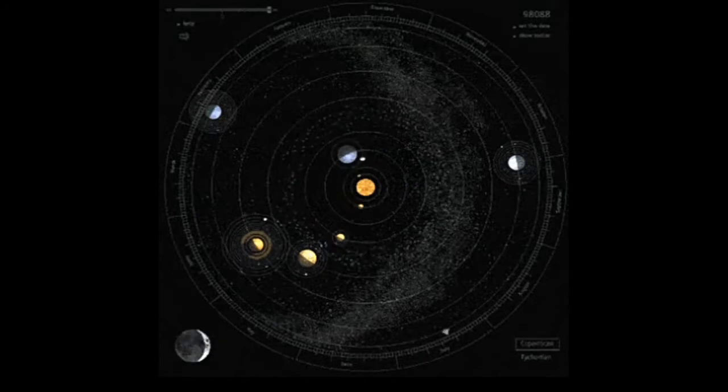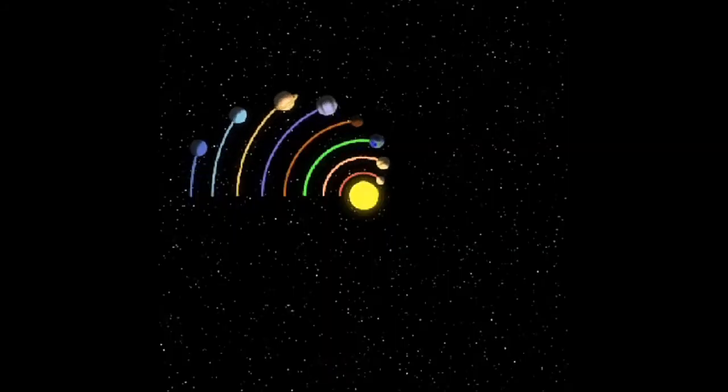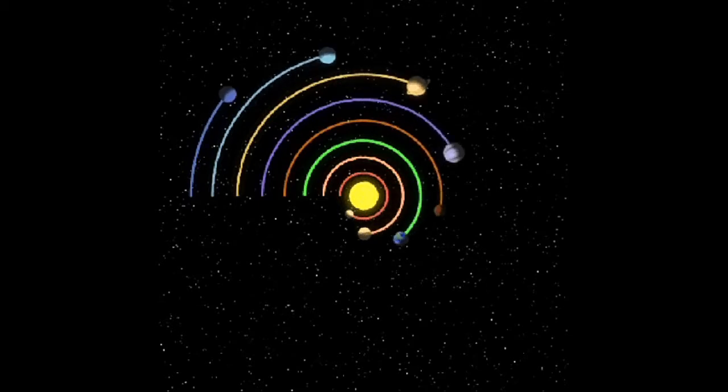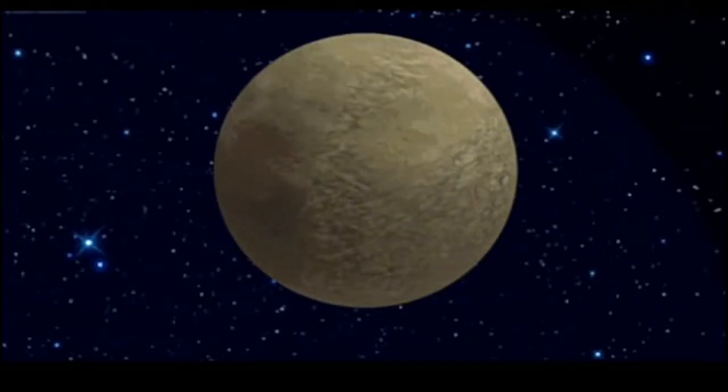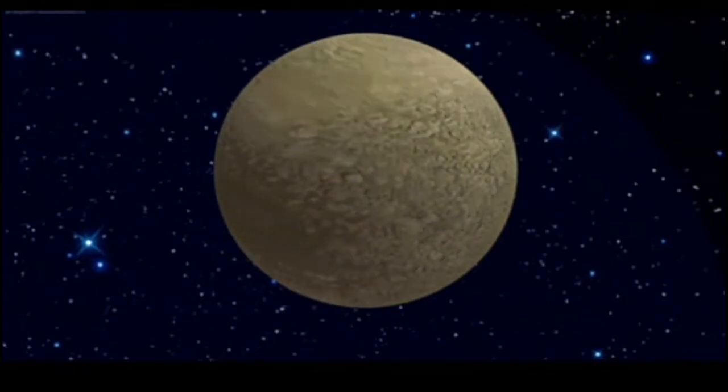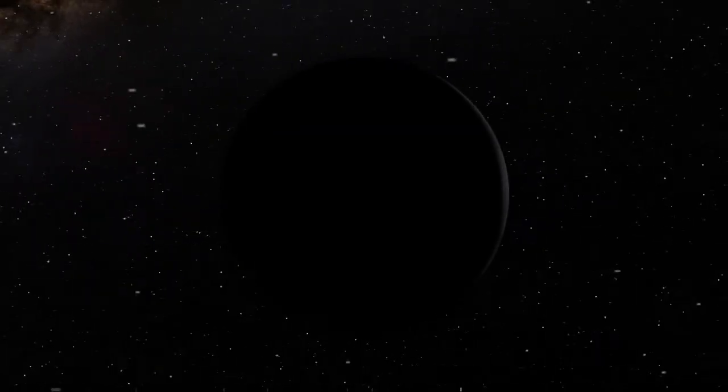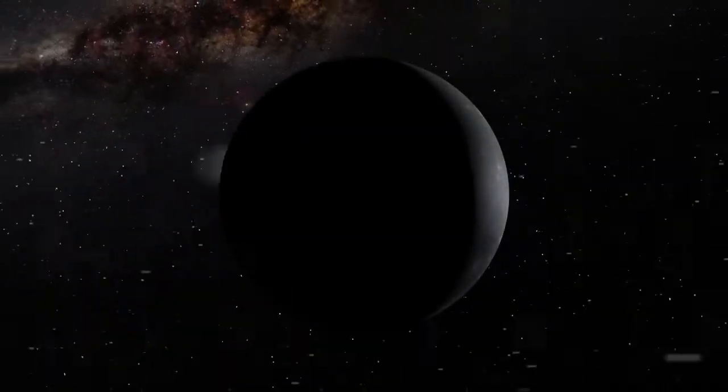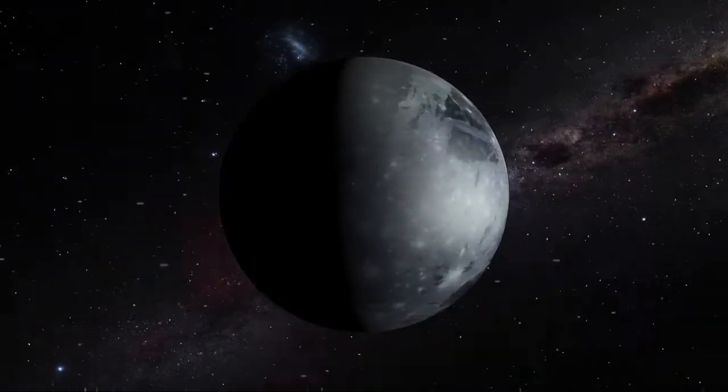In our solar system, the time it takes each planet to complete an orbit around the Sun varies greatly. Mercury orbits the Sun in just 88 days, while Earth takes one year to make a complete orbit. Pluto, whose average distance from the Sun is 40 times greater than Earth, takes 248 years to complete its orbit.